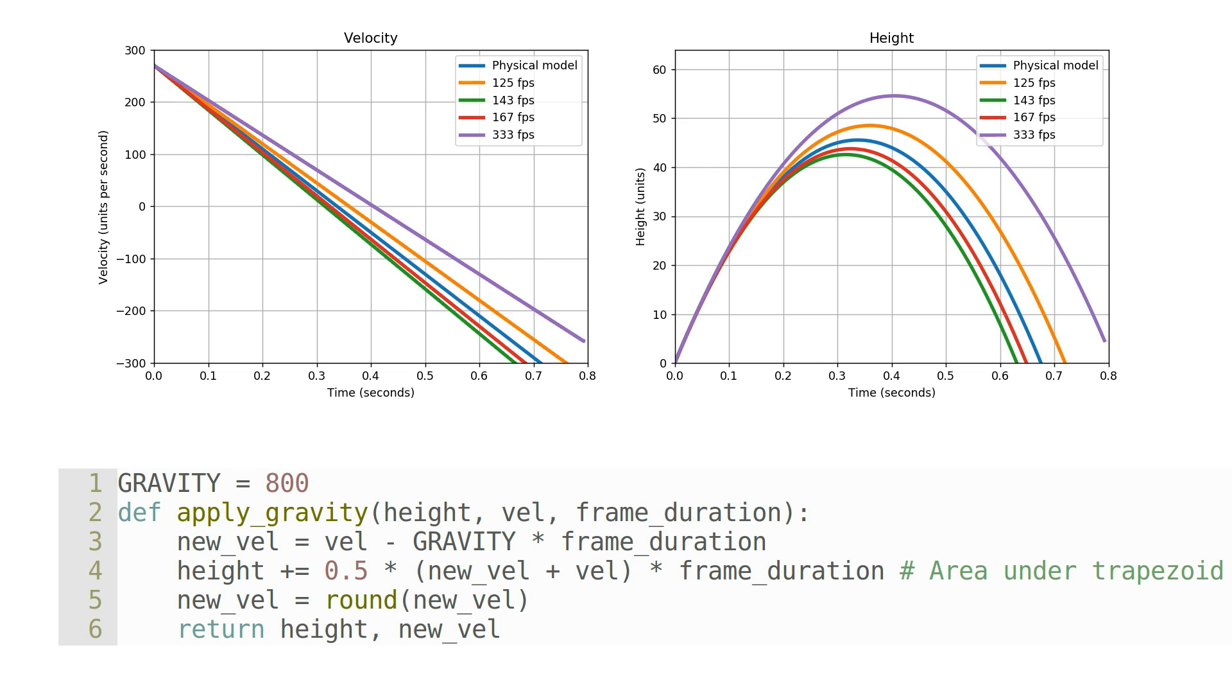125 fps truly is the best option for playing online, however if playing locally or on LAN, and your computer can achieve 333 frames per second, then you can enjoy much higher jumps with this setting.